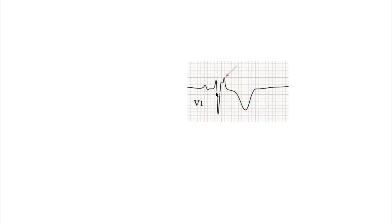Here is a magnified view of an epsilon wave in lead V1. You can see that there is a prominent hump after the QRS complex in lead V1. As mentioned, this is the most specific sign of ARVC on an ECG.